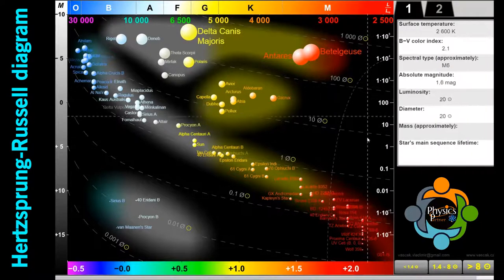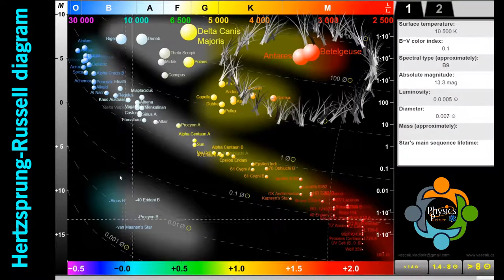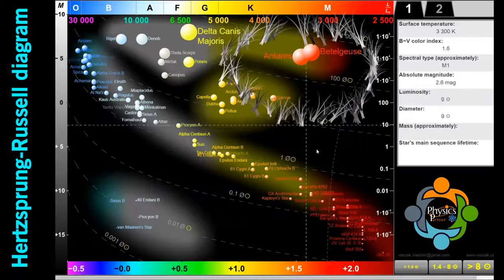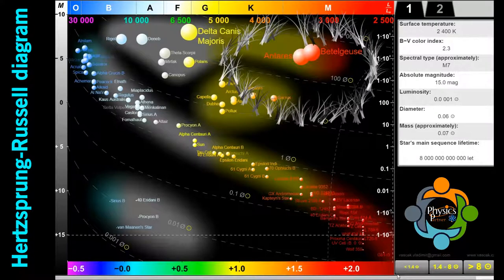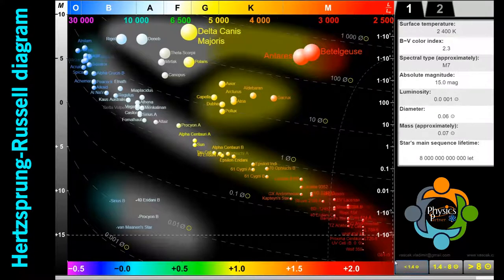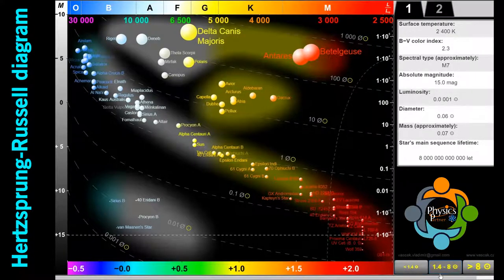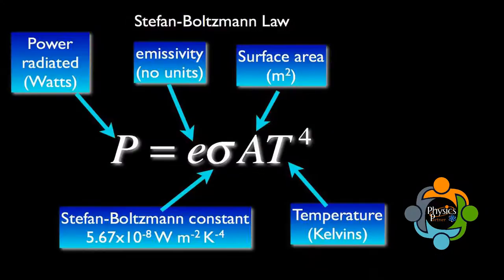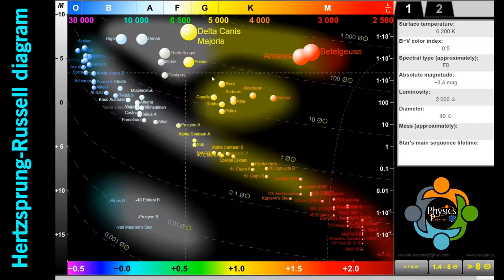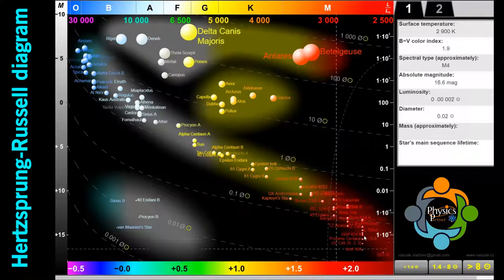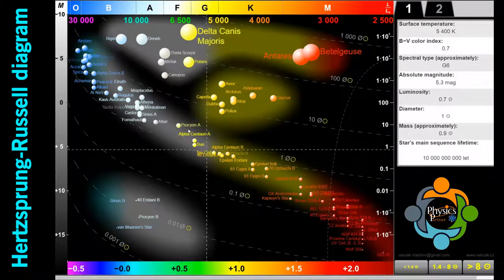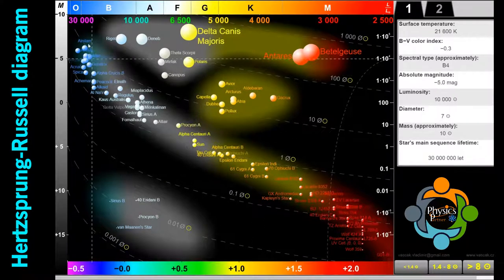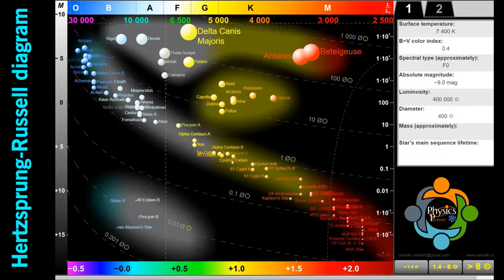Region number two: red giant and supergiant stars, luminosity classes I through III, occupy the region above the main sequence. They have low surface temperatures and high luminosities, which according to the Stefan-Boltzmann law means they also have large radii. Stars enter this evolutionary stage once they've exhausted the hydrogen fuel in their cores and have started burning helium and other heavier elements.